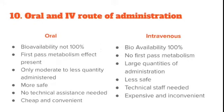The next question asks for the difference between oral and IV routes of administration — a very common pharmacology question. For oral route, bioavailability is not 100%, whereas intravenous route bioavailability is 100%. The first-pass metabolism effect is present in oral route because the drug passes through the GI tract, whereas intravenous administration goes directly into the blood, so no first-pass metabolism occurs.